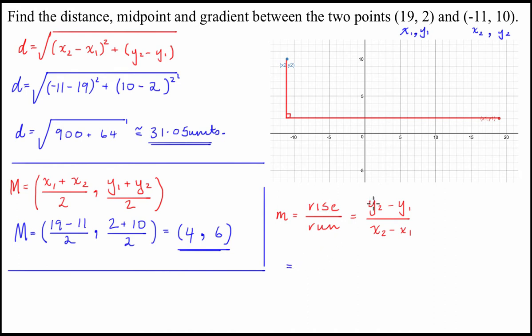So, this is going to be equal to y2, which is 10, and then subtract y1, which is 2, on x2, which is -11. Take x1, which is 19. Now, this is going to be equal to 8 on -30, which is equal to -4/15. So, that's all she wrote, guys.